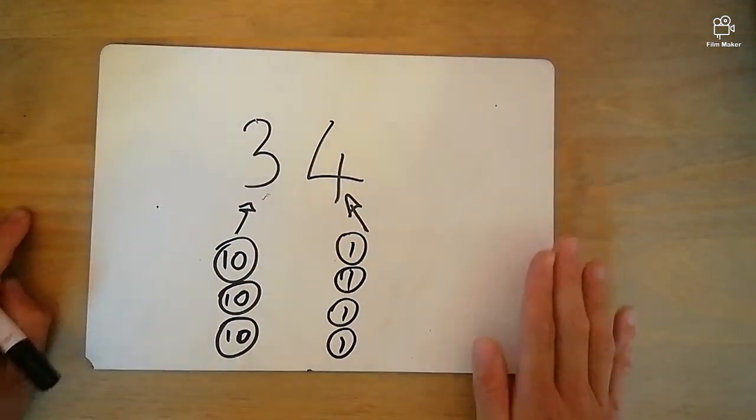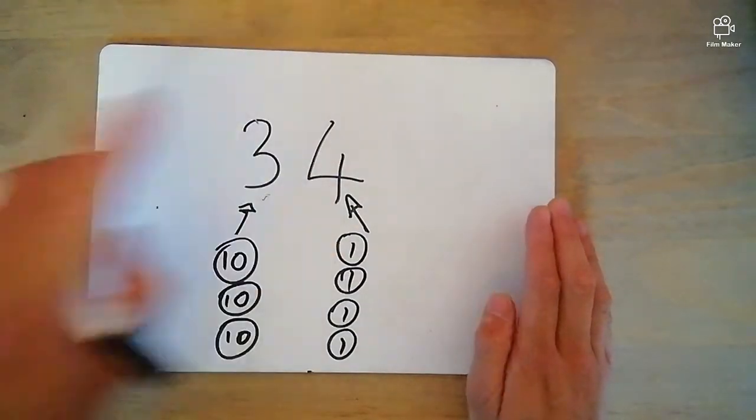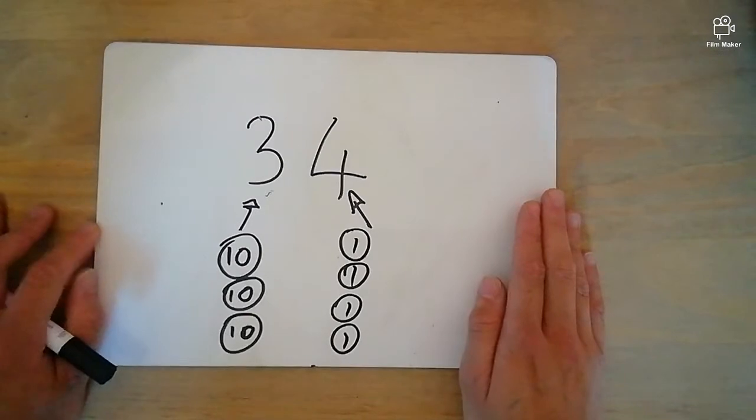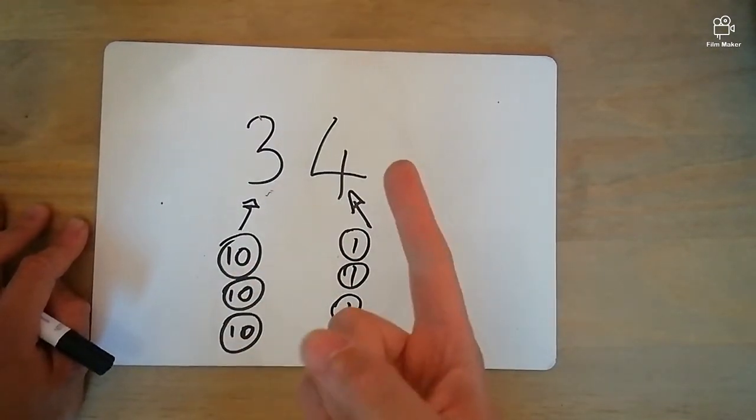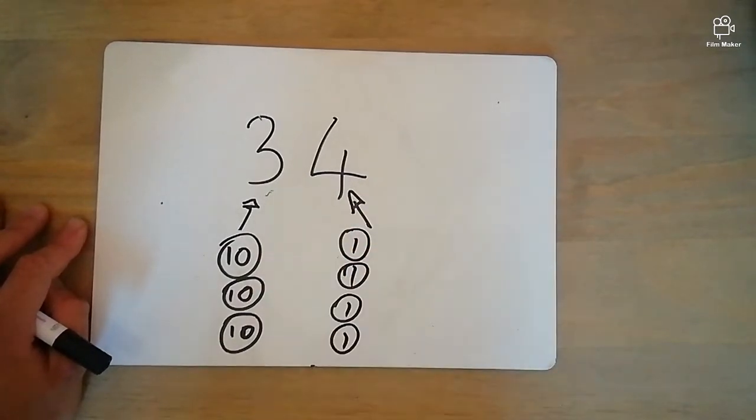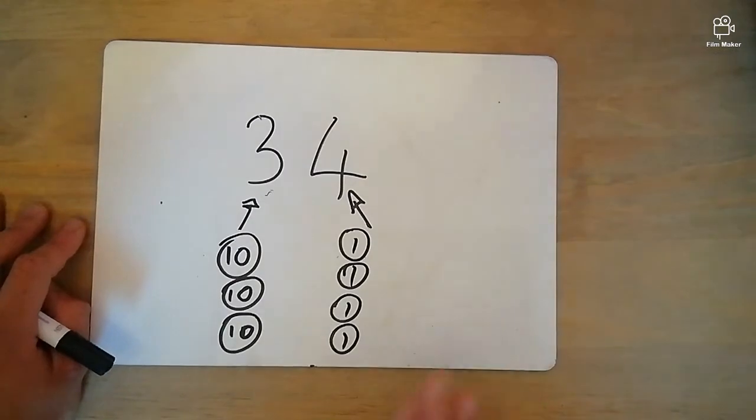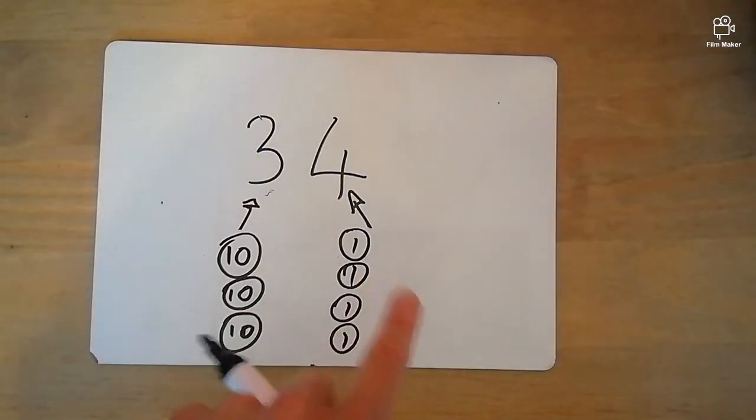Now I hope that's really simple and what I would really like you to do is go away, write some more two-digit numbers and see if you can represent them with whatever you can find. Now, you might want to draw it, you might have sticks and pebbles, you can even use food. Lego is a good one as well, some of the bigger blocks representing tens, some of the smaller ones representing ones.